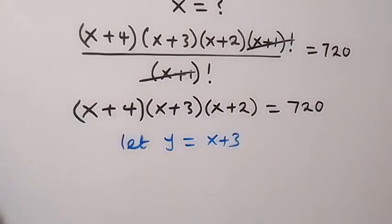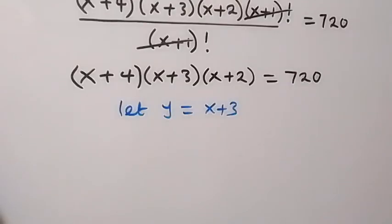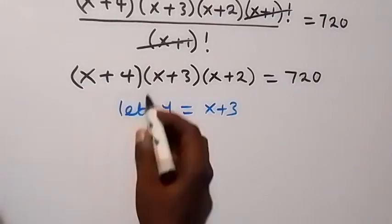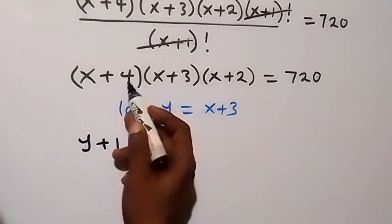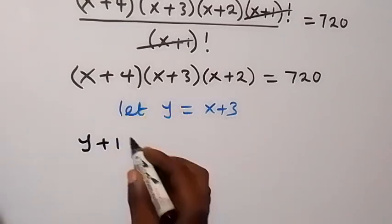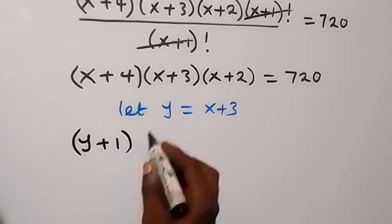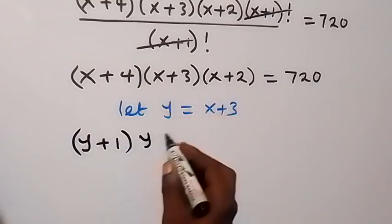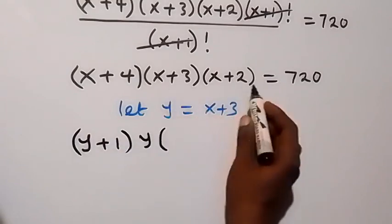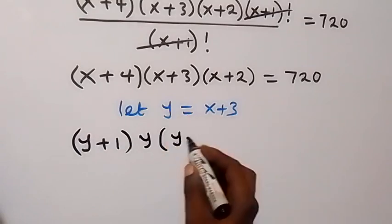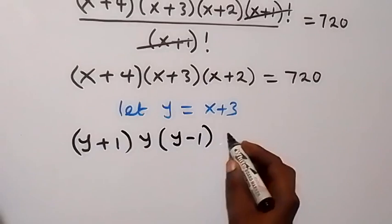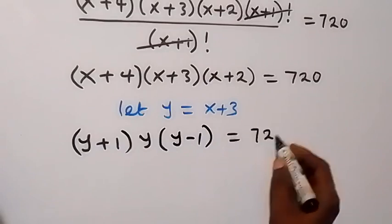Then x+4 will be written in terms of y as y+1, because it is more than x+3 by just 1. And x+2 is y-1. So this becomes (y+1) times y times (y-1), equals 720.